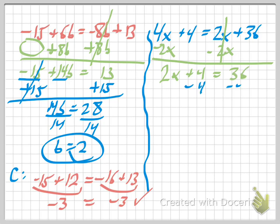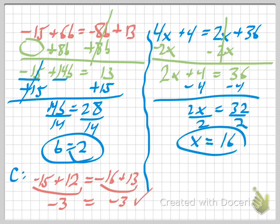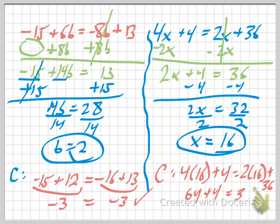What's half of 32? Be careful. Don't be too fast. 16. All right, now let's check it. So the check, let's put 16 in there. 4 times 16 is 64. Equals 2 times 16 plus 36. So 64 plus 4 is what the left simplifies to. On the right, we get 32 plus 36. And this one equals 68. And this one equals 68. And so again, it checks.